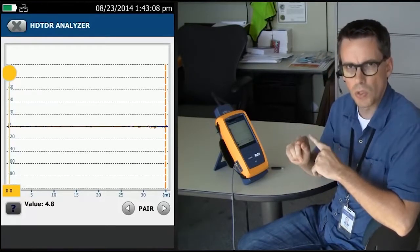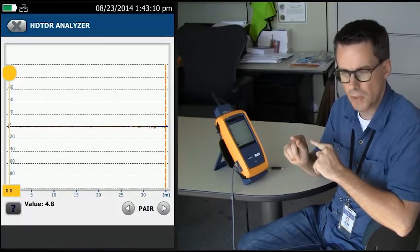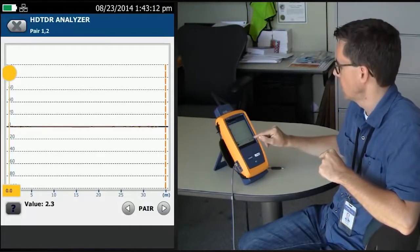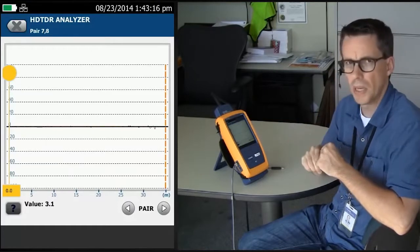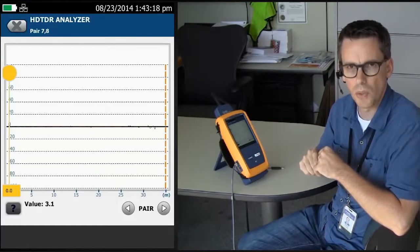Now, we only want to look at the pair that causes the problem, which was pair 7-8. So I'm going to tap the pairs until I see pair 7-8 appear in the top left-hand corner.